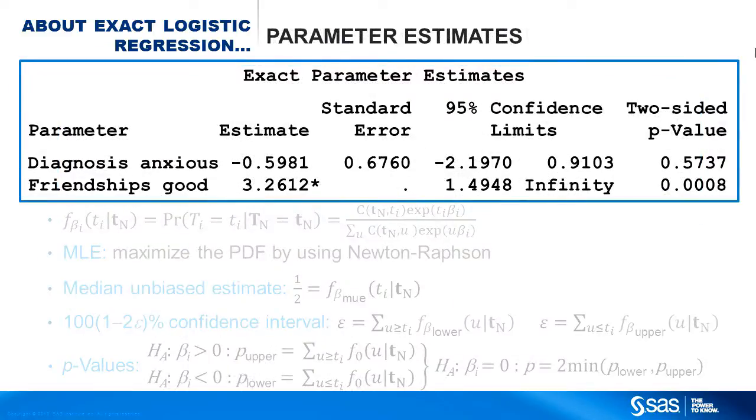The exact parameter estimates are based on the slices and say friendships is a significant predictor, with an asterisk. Your analysis is done. Friendships is a significant factor for recovery.